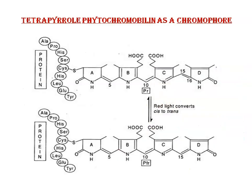Next is the structure of the chromophore. A chromophore is a linear tetrapyrrole — phytochromobilin. This is a structure of phytochromobilin as a chromophore. Here it is a ring attached to a protein made up of different amino acids, attached through a thioether linkage to a cysteine residue. These are the amino acids and this is the cysteine residue.